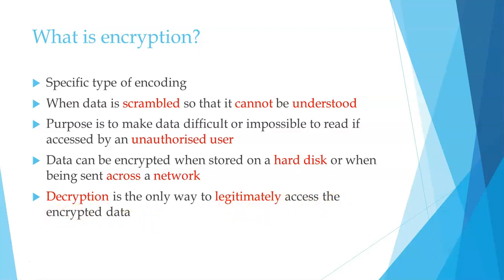The idea is to take information or a message that you send to someone and make that information unreadable to anyone that can intercept that message, like a hacker. But when that message reaches the person you sent it to, the message will become decrypted and that person can then read it. For example, if you send the text 'hello' to someone, it might scramble it up to '123'. Then when it reaches the recipient, that '123' will decrypt back to 'hello'.